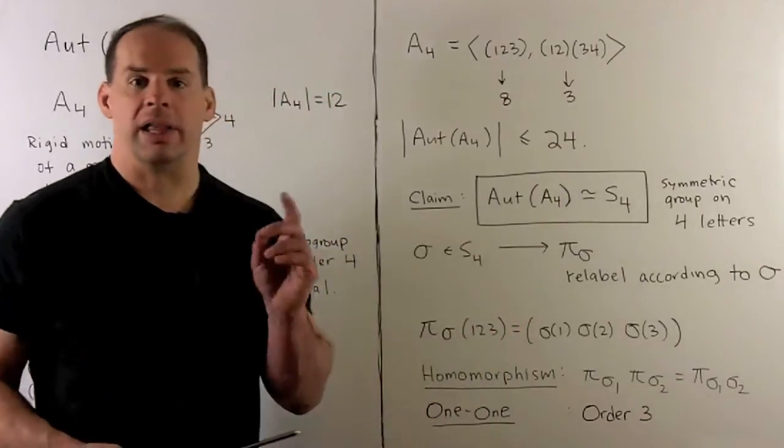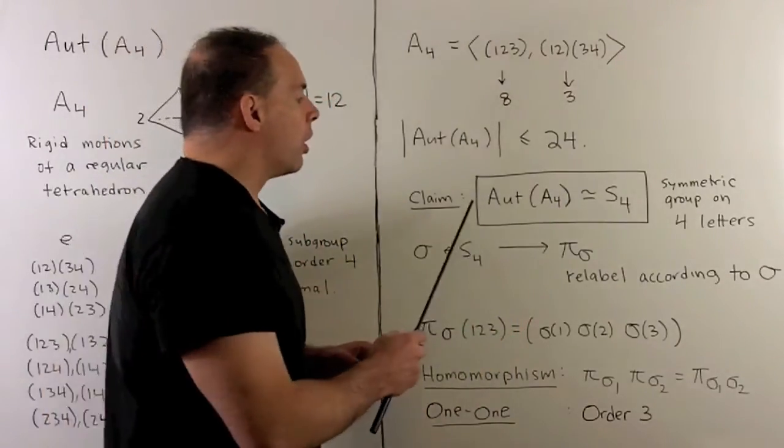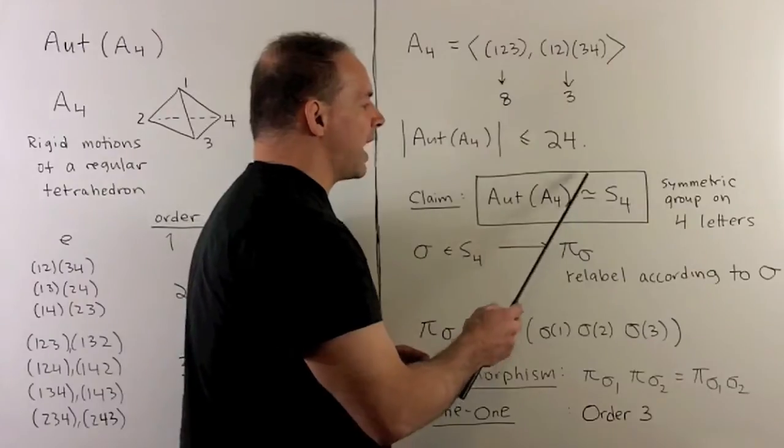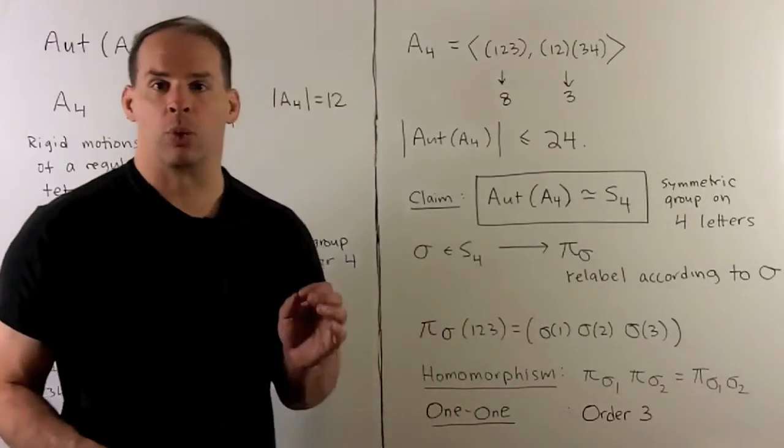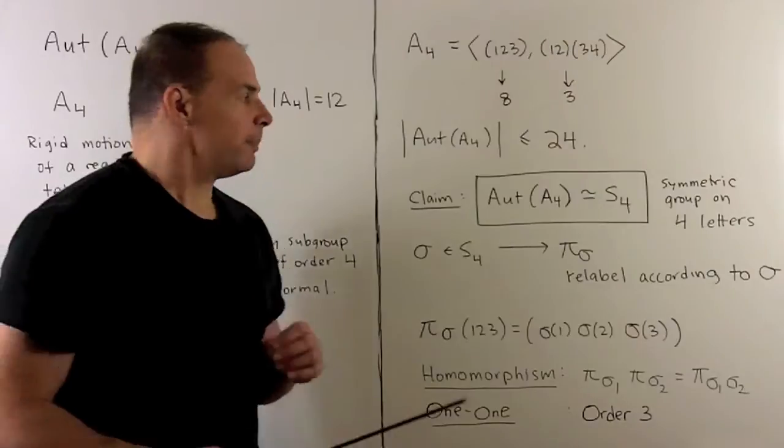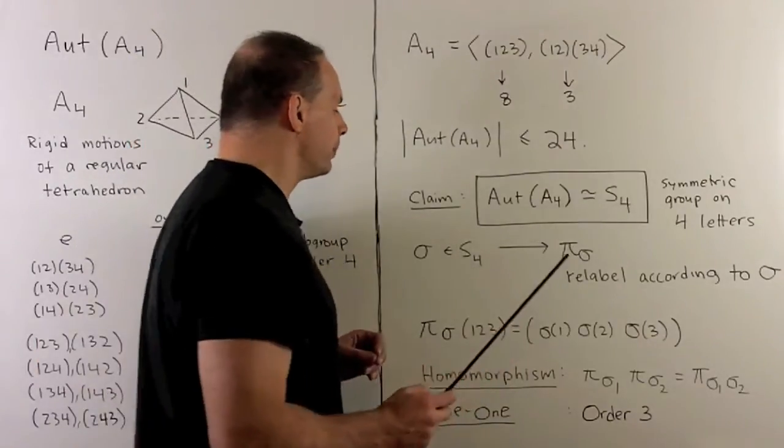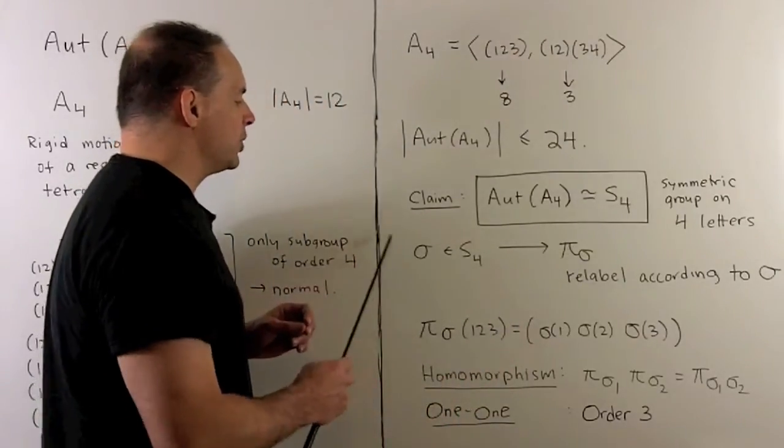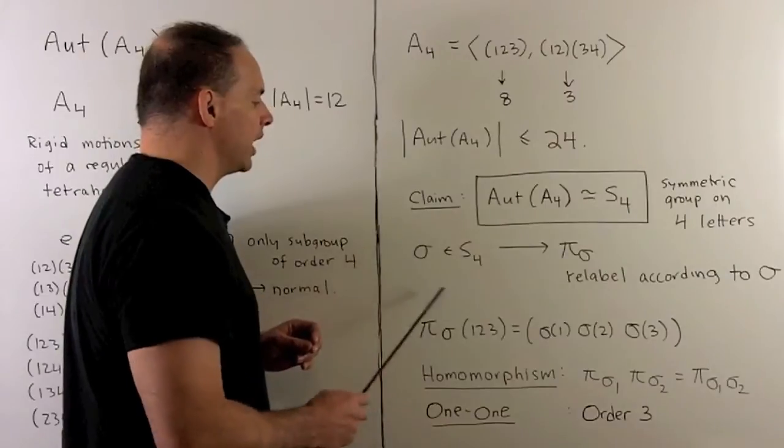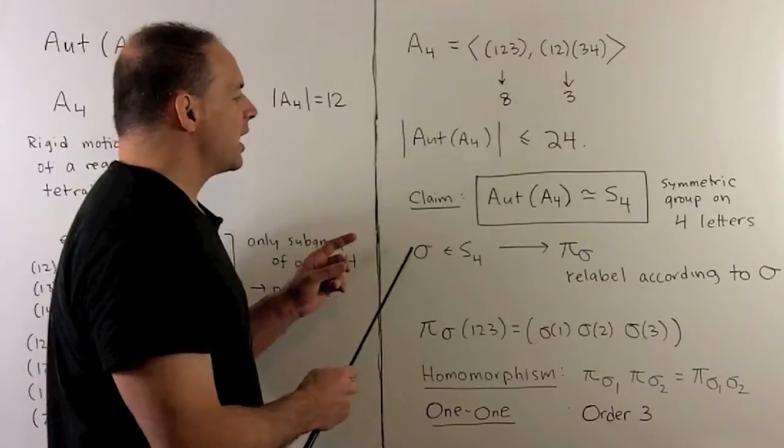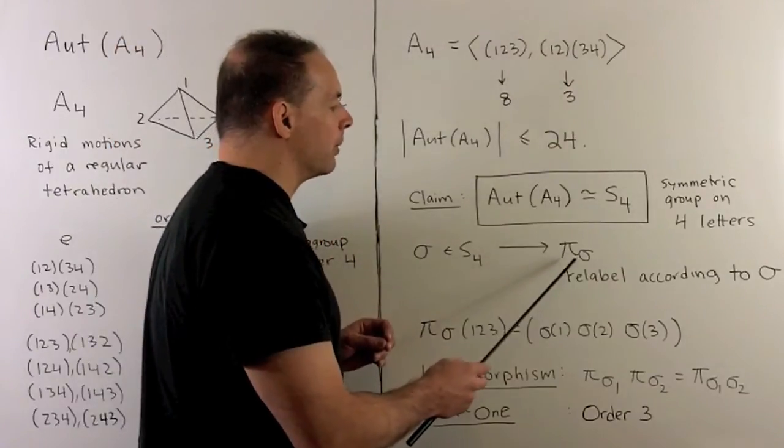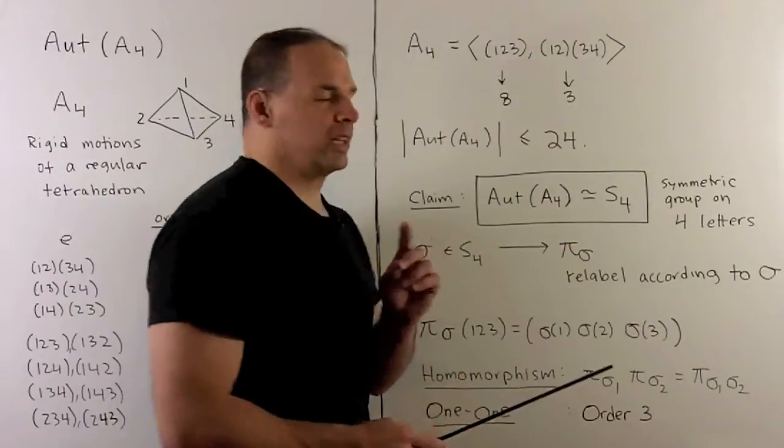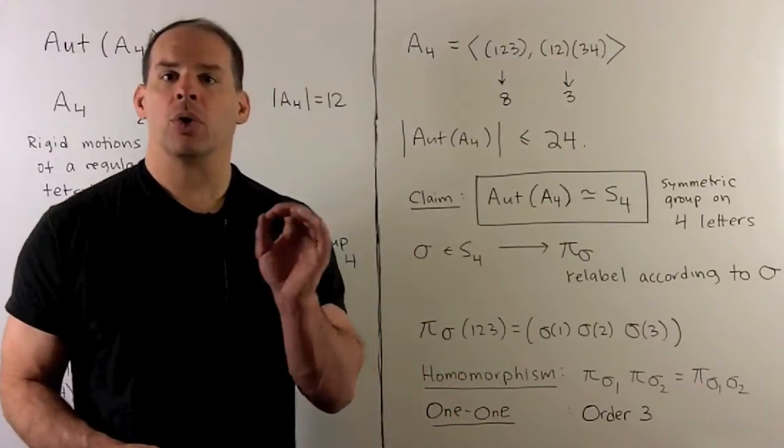Claim: Aut(A4) is isomorphic to S4, the symmetric group on four letters. The recipe for the isomorphism: if I have a permutation σ for S4 in cycle notation, we're going to send that to π_σ. We're just going to relabel your elements of A4 according to σ.